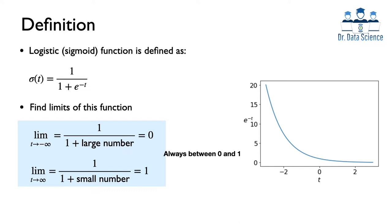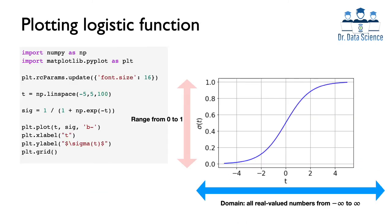This is a very important property: the logistic or sigmoid function is always between 0 and 1. To confirm this, we plot the function using numpy by creating real-valued numbers from negative 5 to 5 using numpy linspace, then applying the sigmoid function as 1 over 1 plus exponential of negative t. The resulting plot shows this increasing function going from 0 to 1, exactly consistent with the previous analysis.